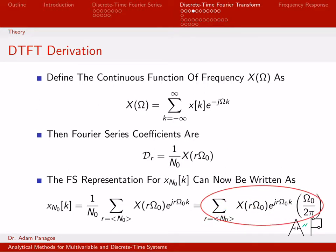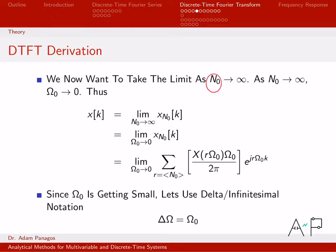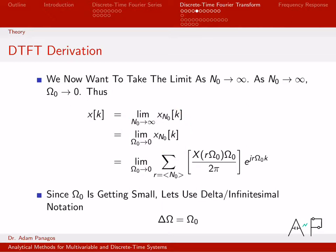So far, this is the DTFS representation of x of n-naught. Now I'm going to let n-naught get really large. As n-naught gets large, this periodic discrete time signal turns into the original signal I wanted to analyze. Also, since n-naught equals 2pi over omega-naught, if n-naught is getting very large, omega-naught must be getting very small. These two limits are completely equivalent. So instead of thinking about n-naught getting large, I can equivalently think about omega-naught getting small.